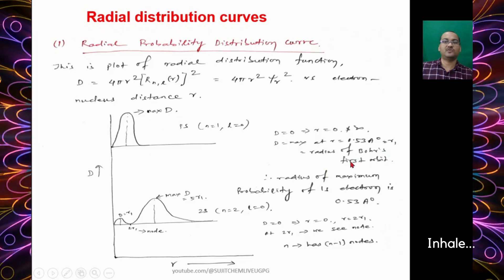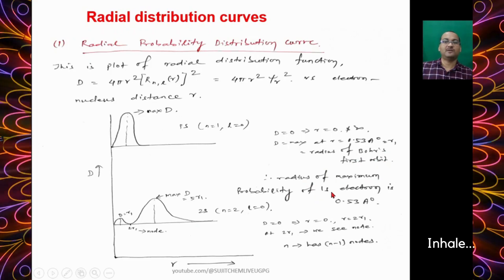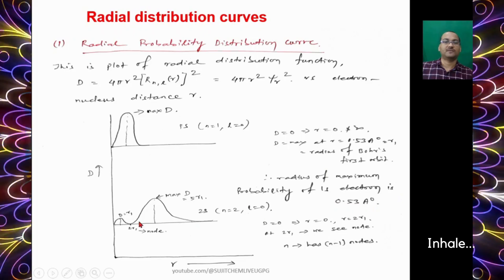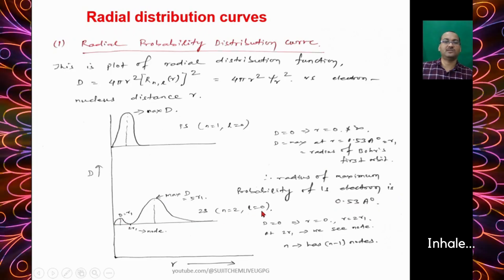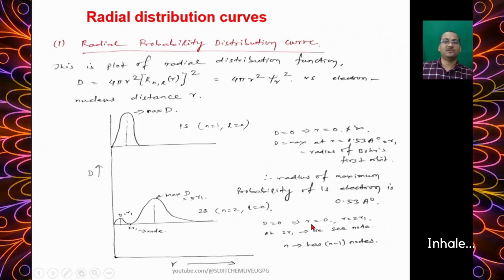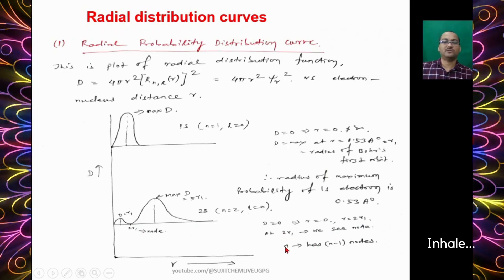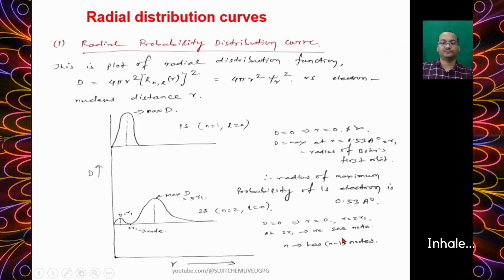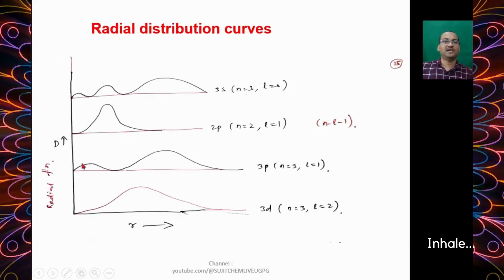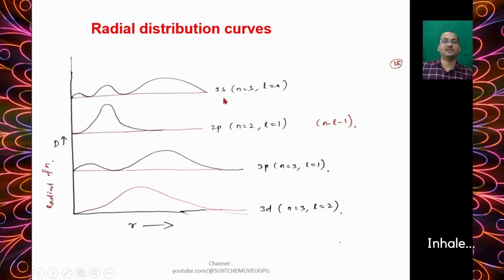This becomes equal to radius of Bohr's first orbit, and radius of maximum probability for 1s electron is 0.53 angstrom. For a 2s orbital when n = 2 and l = 0, this d value will equal 0 when r = 0 and r = 2r₁. At 2r₁ you see a node. For principal quantum number n, it will have n-1 number of nodes. Similarly you can find the graphs of d versus r for 3d, 3p, 2p and 3s orbitals.